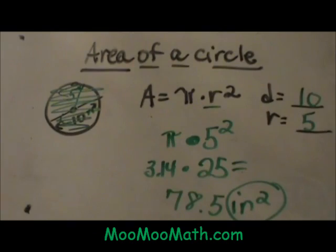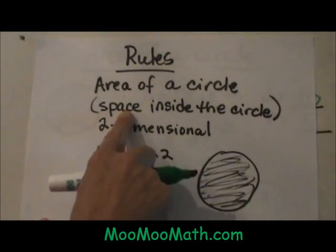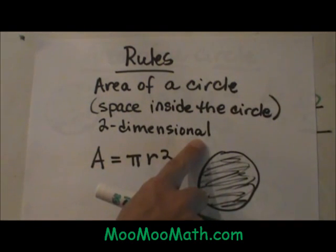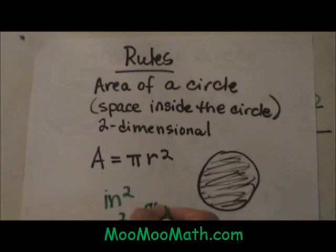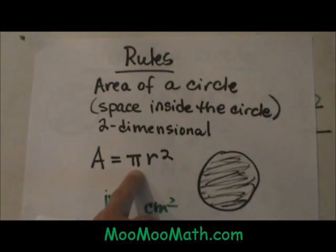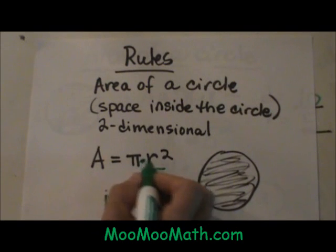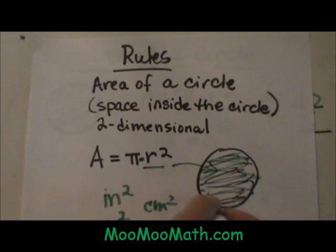Let's look at the rules for the area of a circle. The area of a circle is the space inside the circle. It is two-dimensional, so your units will always be in inches squared, units squared, or centimeters squared. Your formula is area equals pi, which is 3.14, times the radius squared. You always square before you multiply — square it, then multiply by pi, and that gives you the inside area of a circle.